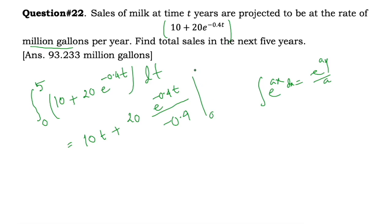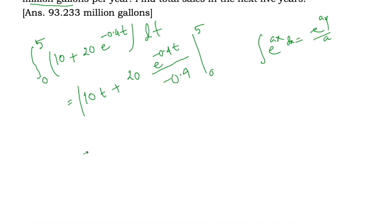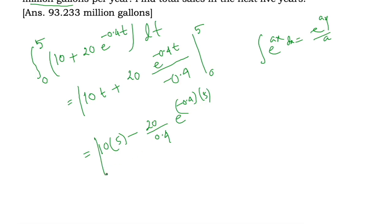Evaluating from lower limit 0 to upper limit 5: replacing t with 5 gives 10 times 5, minus 20 divided by 0.4 times e to the power of minus 0.4 times 5. Then replacing t with 0 gives 0, minus 20 divided by 0.4 times e to the power 0, which equals 1.